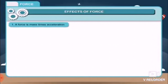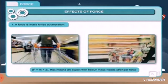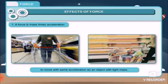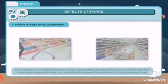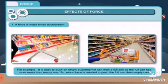First, a force is mass times acceleration. F equals M times A. That means an object with heavy mass needs stronger force to move with same acceleration as an object with light mass. For example, it is easy to push an empty supermarket cart than a full one, as a full cart has more mass than empty one. So more force is needed to push the full cart than empty cart.